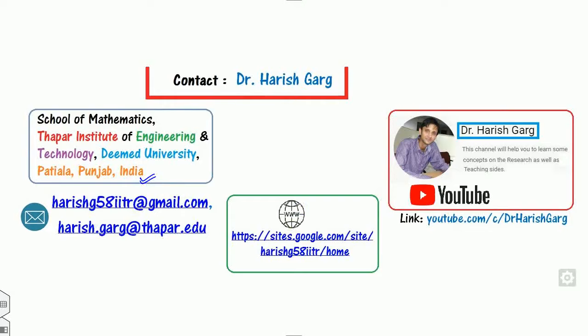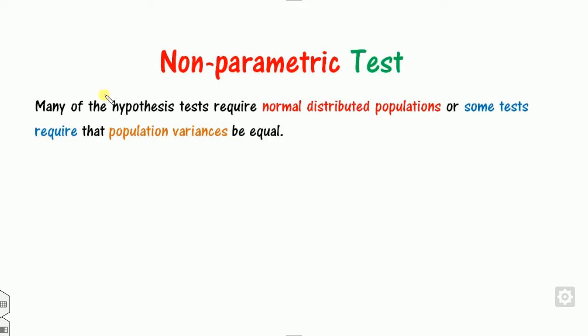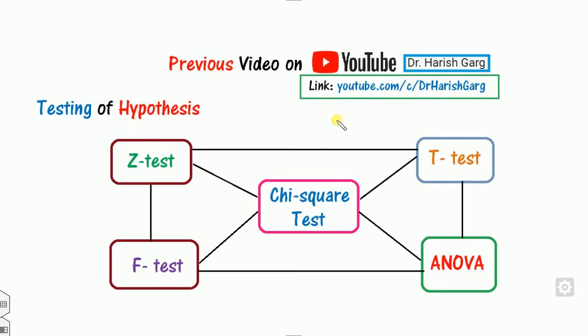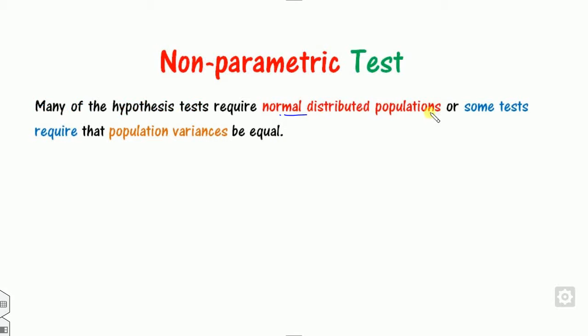First of all, what is the non-parametric test and why do we require it? There are several types of testing of hypothesis which obviously require normal distribution populations. For example, we have discussed so far the Z test, F test, T test, ANOVA, and several others. In these tests we need the population to be normally distributed, or some tests require that the population variance be equal, like ANOVA.